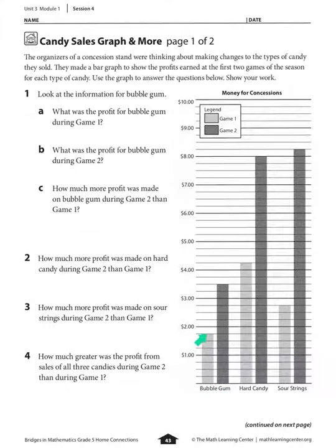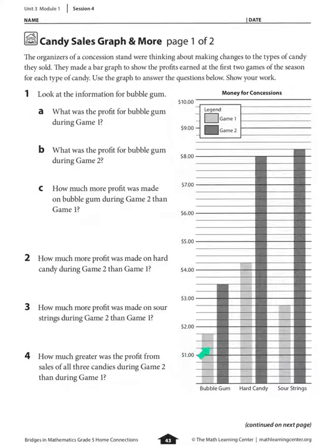Game one is the light gray bar, and I can see it's between the one dollar and two dollar lines. Since there are four lines in between, the halfway mark is a dollar fifty, the second mark is a dollar twenty-five, and the third mark is a dollar seventy-five. So the profit for bubble gum during game one is a dollar seventy-five.